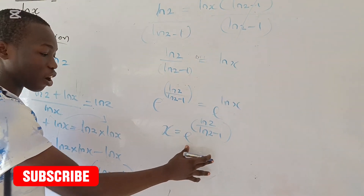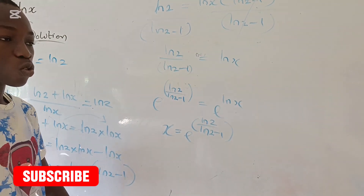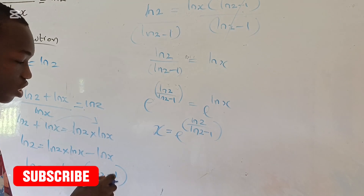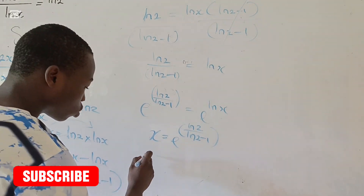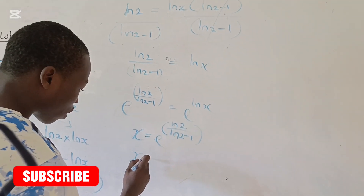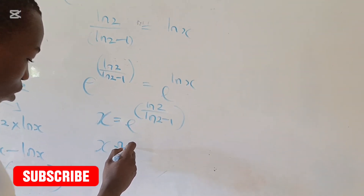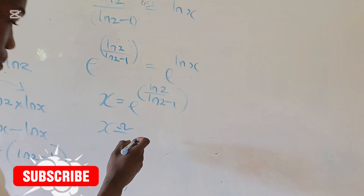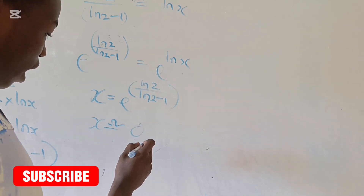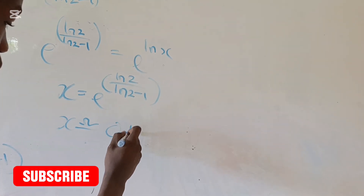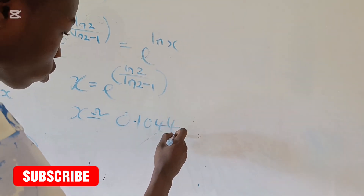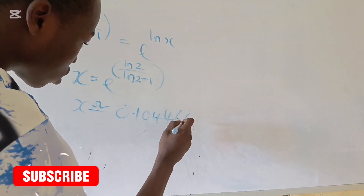Let's now input this into our calculator to find the approximate value of x. When you do so, you are going to have the approximate value of x to be 0.104466.